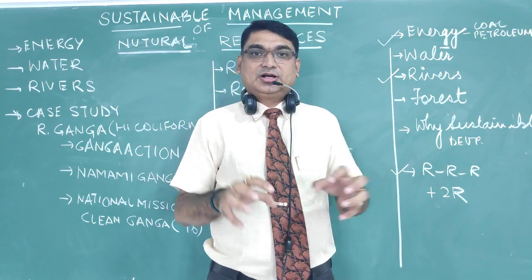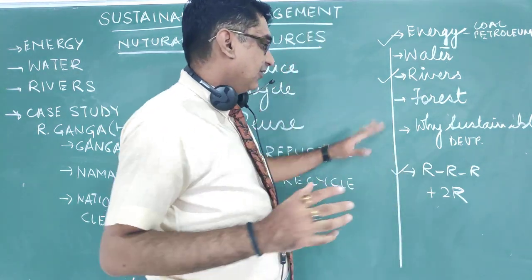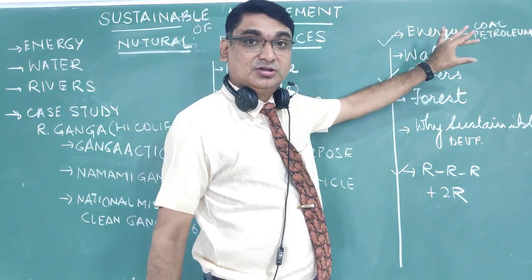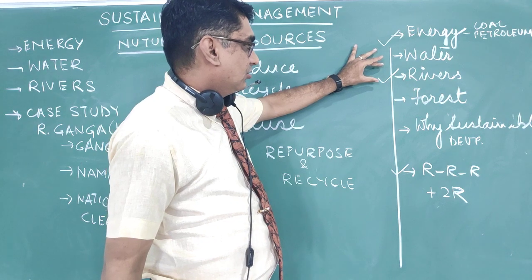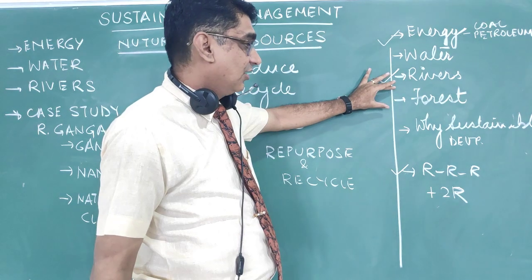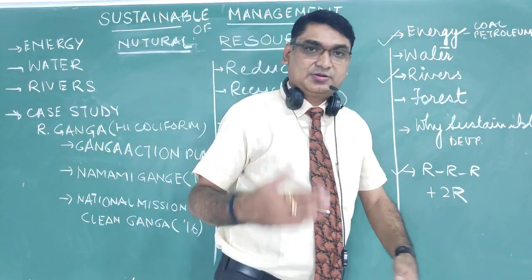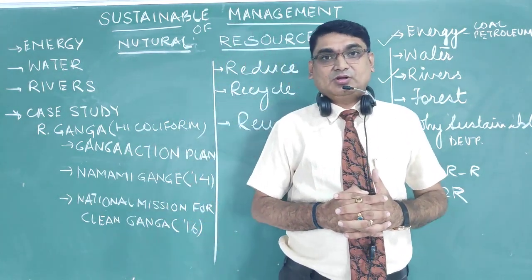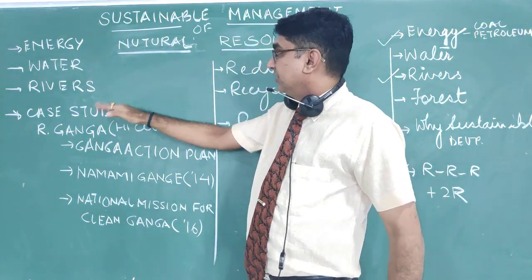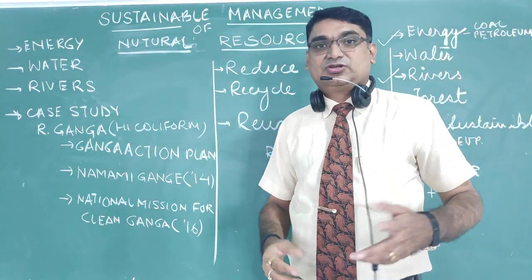Today we are going to take up the topics of the chapter. The chapter has been roughly divided into energy — that is coal and petroleum — water, how to conserve water and what are the uses, river case studies, forest resources and wildlife, and then the need for sustainable development and the policy of 3R plus 2R. Today we are going to deal with the energy part. For water, we will see only the rivers and a case study, and have a discussion on the 3R policy which everybody must follow.